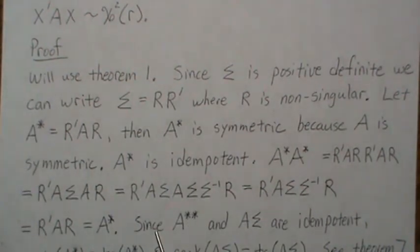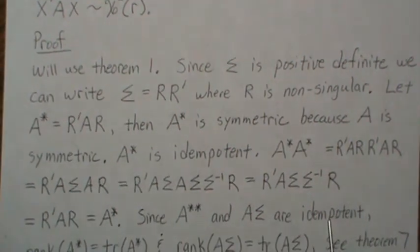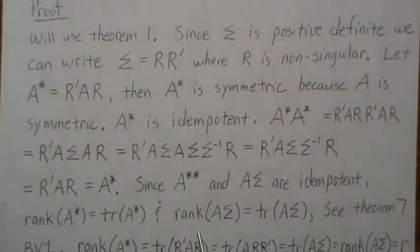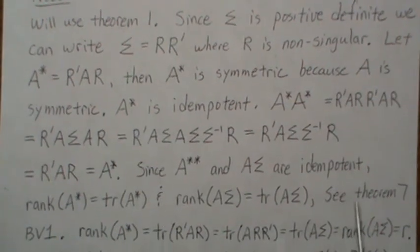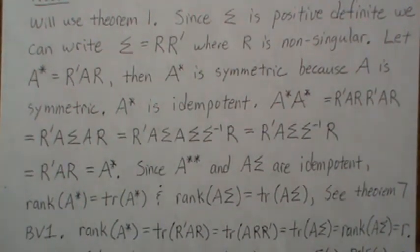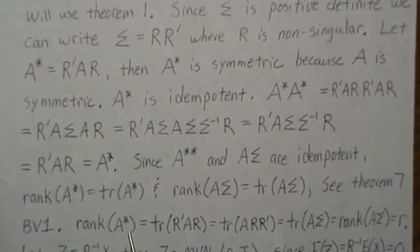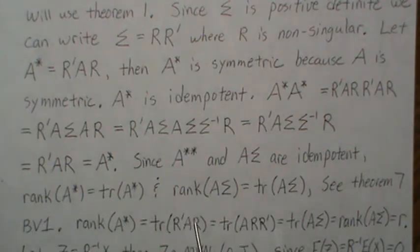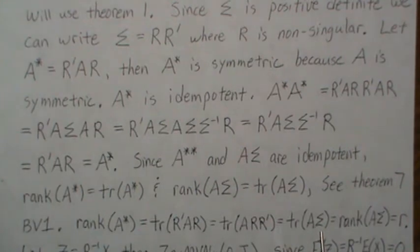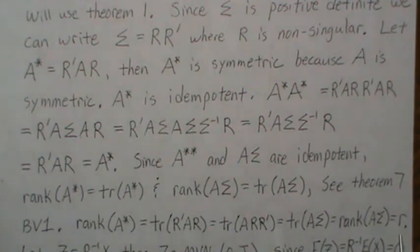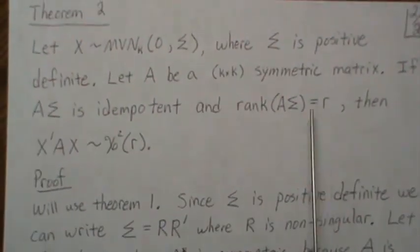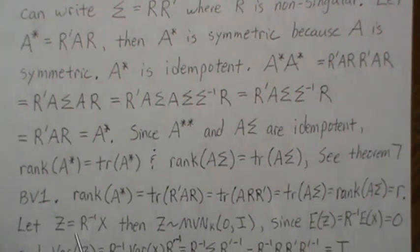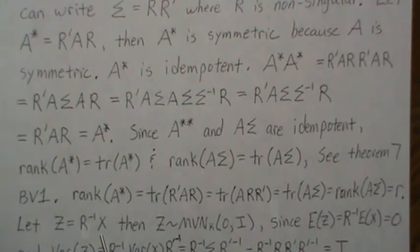Since A* and A*Sigma are idempotent, we know that rank equals trace in both cases — see theorem 7 in background video 1. So the rank of A* equals the trace of A*, which equals trace(R'AR). Since we can rearrange matrices inside a trace, and RR' = Sigma, and A*Sigma is idempotent with rank R by assumption, the rank of A* is R. Now let Z = R⁻¹X. Then Z is multivariate normal zero I.